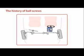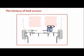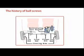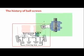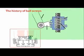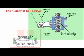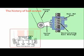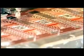The first attempt to place ball bearings between a nut and screw, replacing sliding friction with rolling friction, was made in 1898. Ball screws were applied to automotive steering systems in the 1940s and subsequently were used in many kinds of industries, including the machine tool and semiconductor industries.